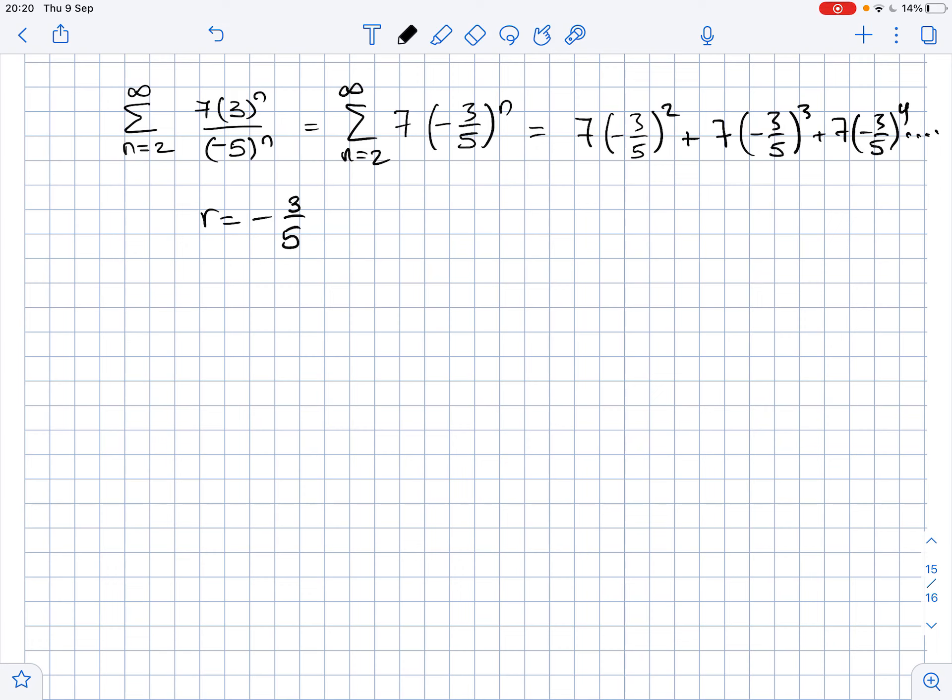To determine if the series is convergent, we remember that a geometric series is convergent if the absolute value of r is less than 1. In our case, the absolute value of negative 3 over 5 equals 3 over 5, which is less than 1, so the series converges.